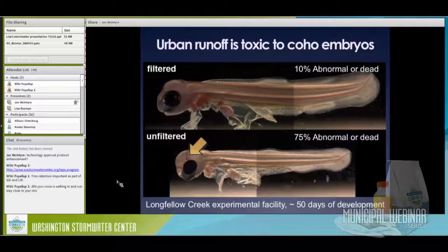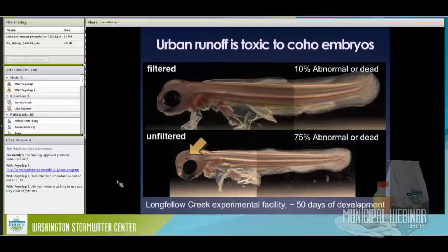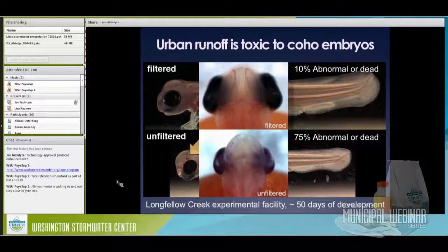Here's how those embryos looked at the end of the experiment. In the filtered water, they looked pretty normal — healthy-looking fish at that period of development. In the regular urban creek water, not filtered, 75% had either died or were abnormal in some way. They were obviously smaller. An arrow points to cranial hemorrhaging — blood spots in the head of the developing embryo. In a top-down view, the embryo in filtered creek water shows the expected lovely symmetrical pattern of vasculature in the head region, whereas in the unfiltered urban creek water we see instead just random blood spots.